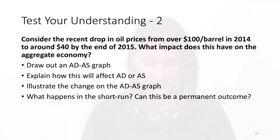Let's do one more example. Here we'll consider a drop in oil prices from over $100 a barrel in 2014 to about $40 by the end of 2015. What kind of impact does this have on the aggregate economy? We want to draw out the ADAS model, illustrate our changes, and analyze the new equilibrium.